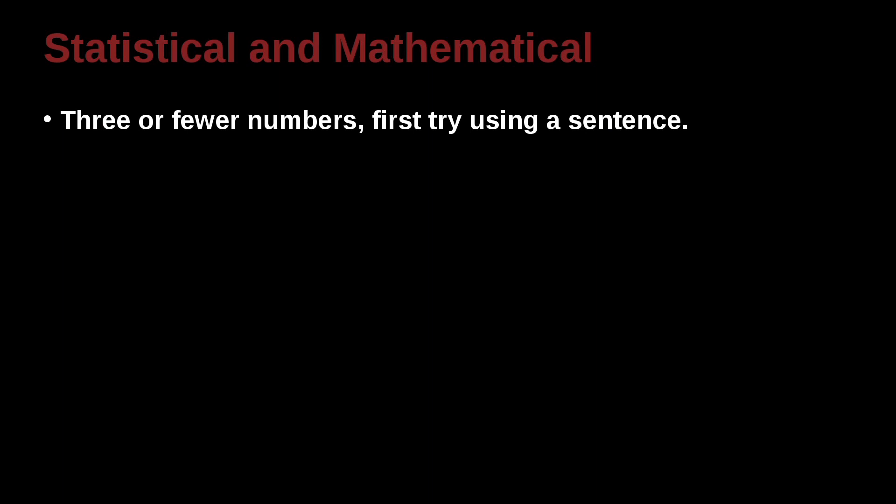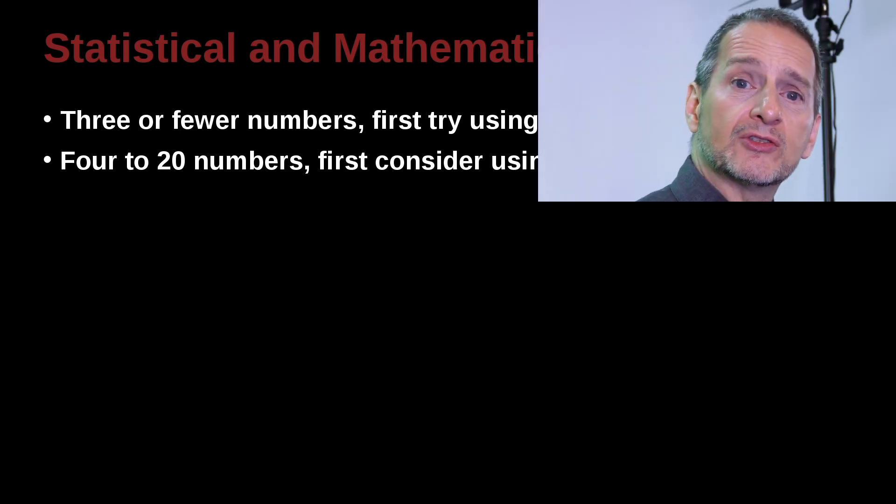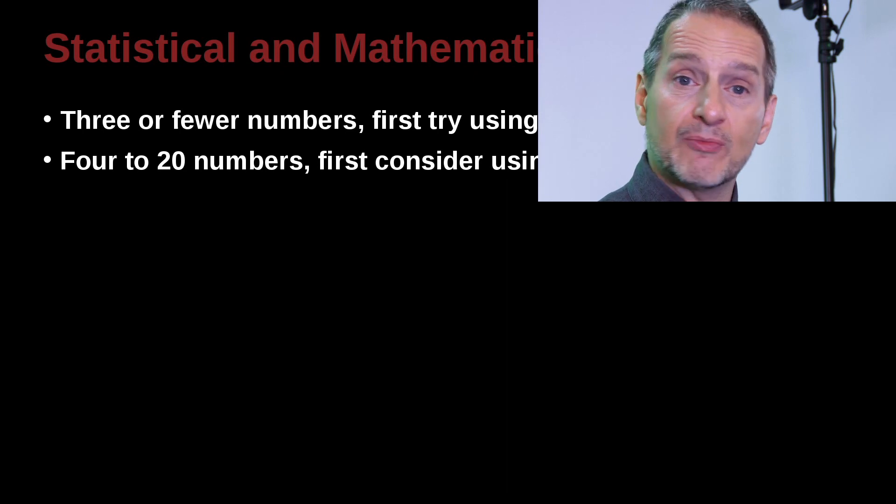If you have three or fewer numbers, that is just a few numbers, then try to put it into a sentence. Do not put them into a table. If you have more than 3, that would be 4 to 20 numbers, then in that case you want to probably use a table.